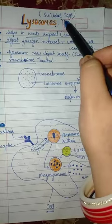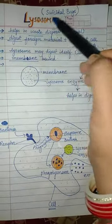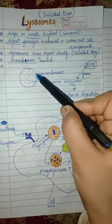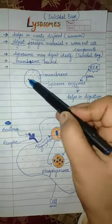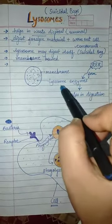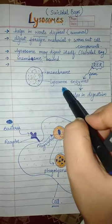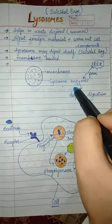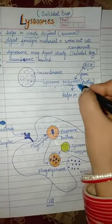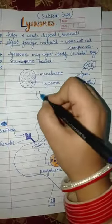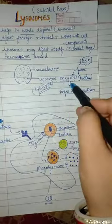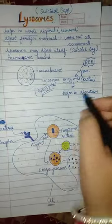First, if we see the structure, this is the membrane of the lysosome, and inside this lysosome cell organelle there is lysosomal enzyme. These enzymes are protein in nature. These lysosomal enzymes help in digestion.